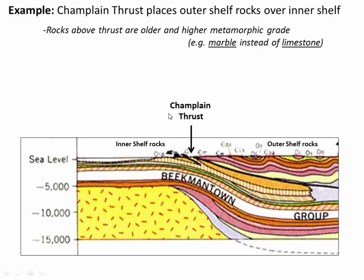Here's what this looks like today in a modern cross section, roughly through the area of Middlebury, Vermont. This is the Champlain thrust fault — a really important thrust developed during the Taconic Orogeny. It's ramping these outer shelf rocks upwards and carrying them to the west over the inner shelf rocks. The pink and yellow rock units on top of the Champlain thrust correlate to the same pink and yellow rock units below — meaning these rocks started way down deep and have been ramped upwards along the fault, giving us older rocks over younger rocks with a higher metamorphic grade above.